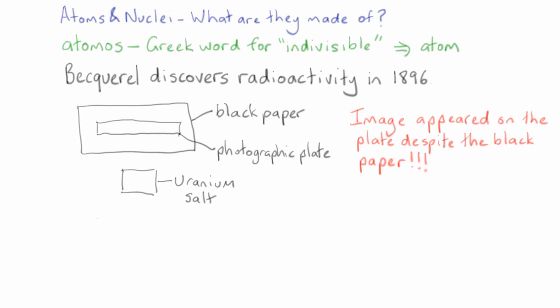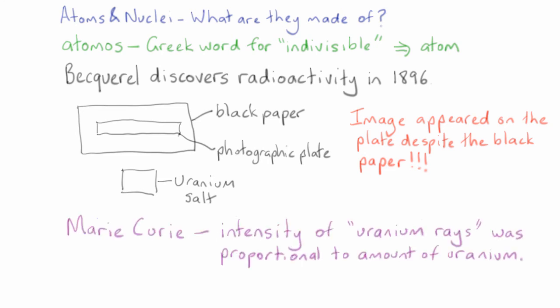News of Becquerel's discovery spread quickly through Europe, and it was another famous French scientist, Marie Curie, who showed that the intensity of these uranium rays depended proportionally on the amount of uranium that was present. This observation implies that the uranium is actually emitting some type of particle, and if the uranium atoms are emitting some type of particle, then atoms must be made up of even smaller objects.